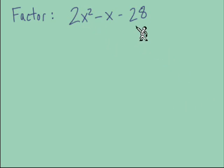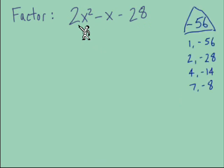Okay, so three terms with a leading coefficient of 2. We know it's going to require these four steps to solve this problem. We multiply first and third: 2 times -28 equals -56.